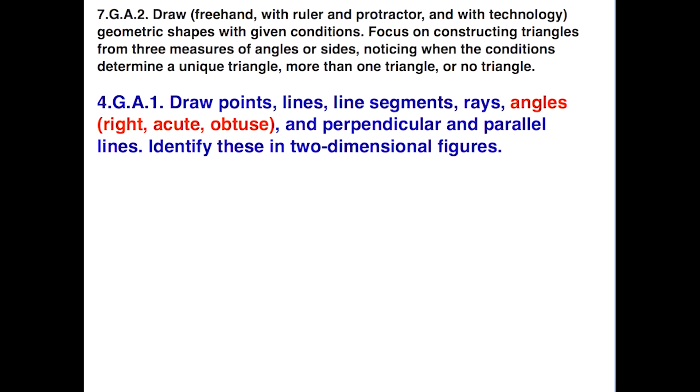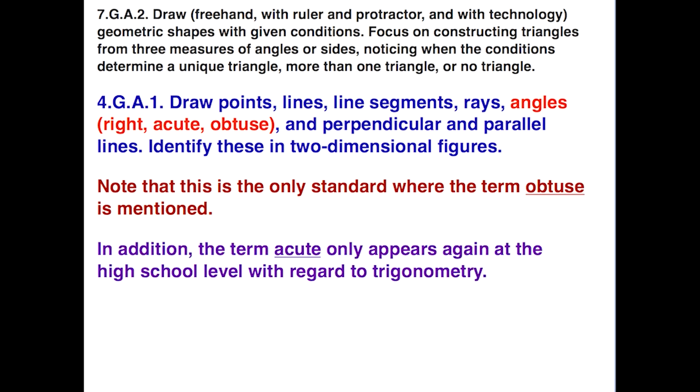Notice that they do introduce the classifications of angles based on measure: right, acute, and obtuse angles. This should, in turn, help students identify triangles based on angle measures, giving them background and experience with the terms that would lead to right triangle, acute triangle, and obtuse triangle. Note that this is the only common core standard where the term obtuse is mentioned. Also, the term acute only appears again at the high school level with regard to trigonometry.